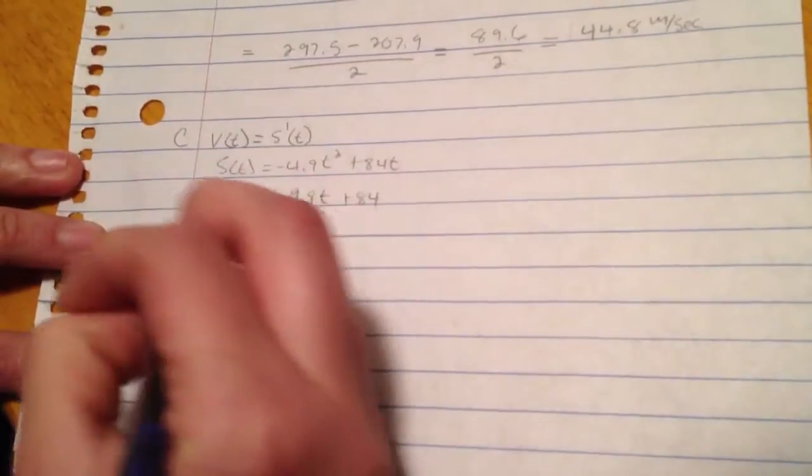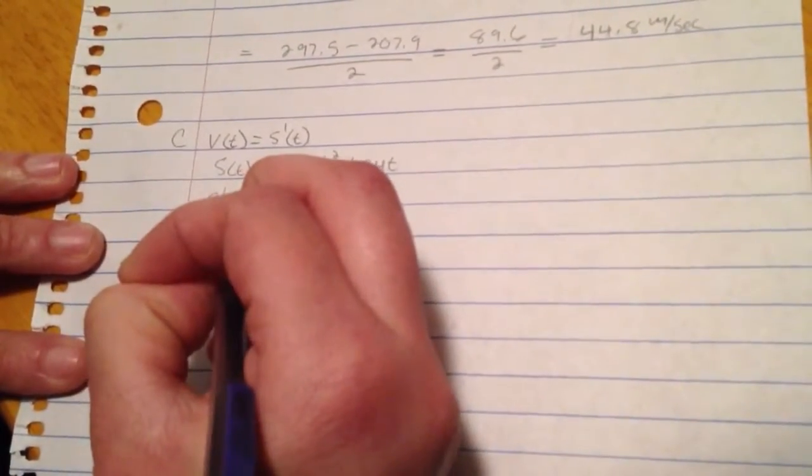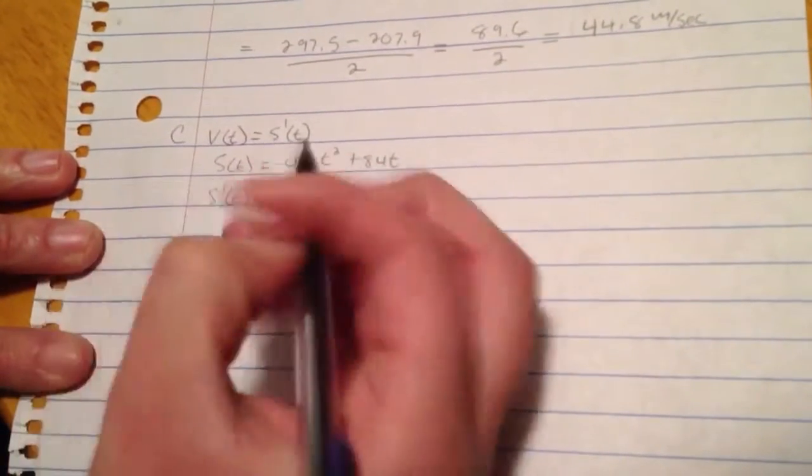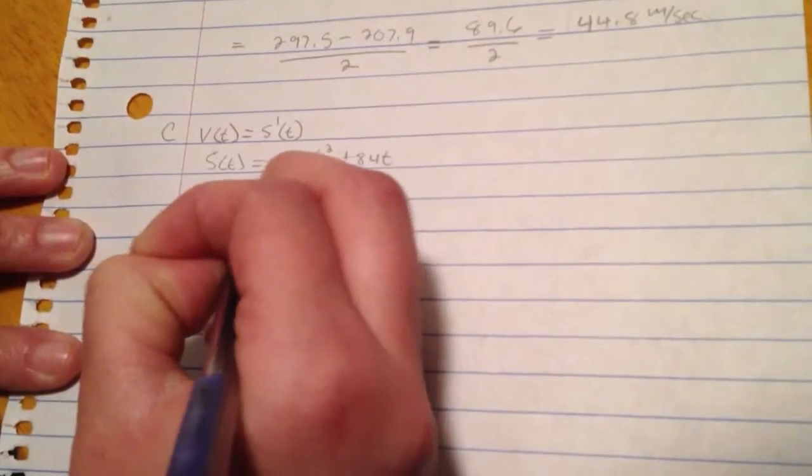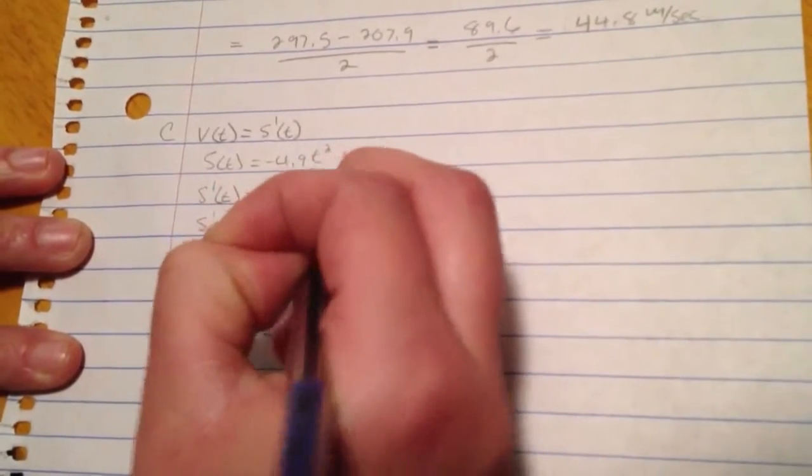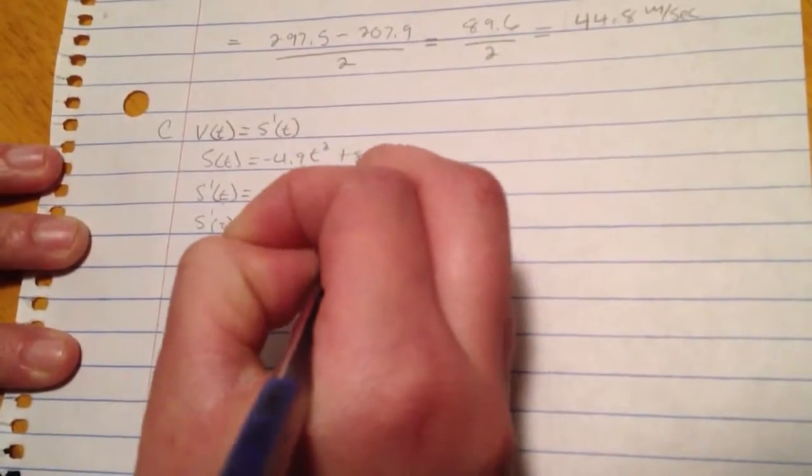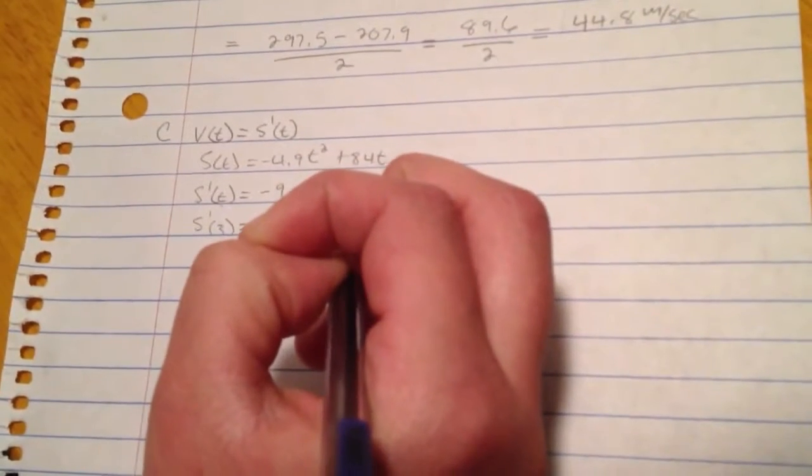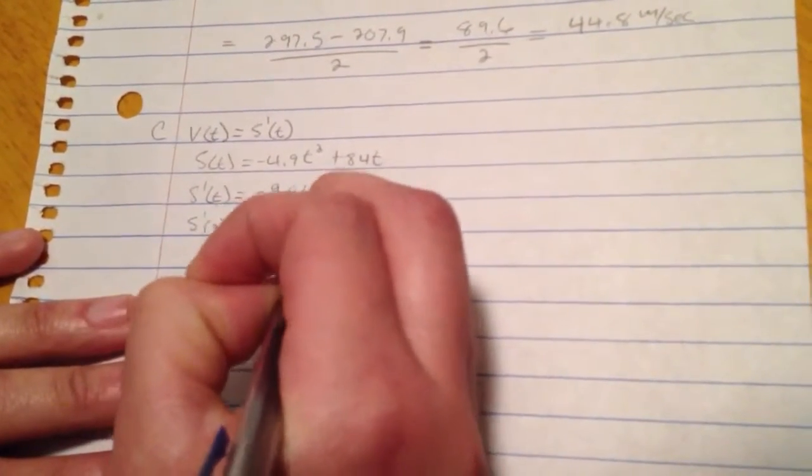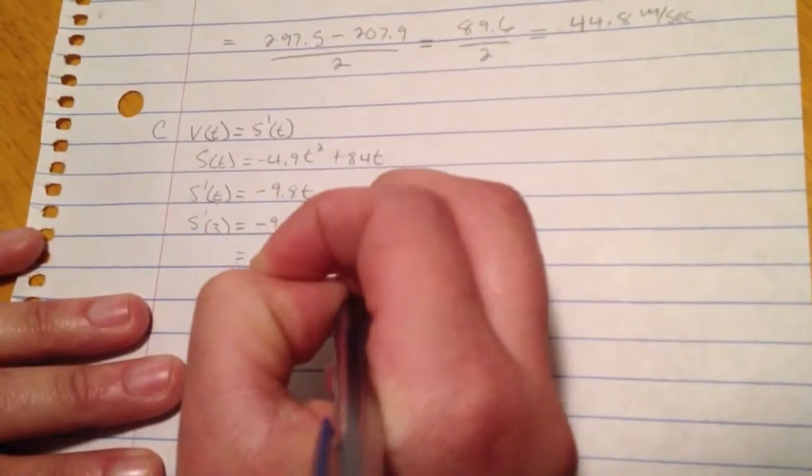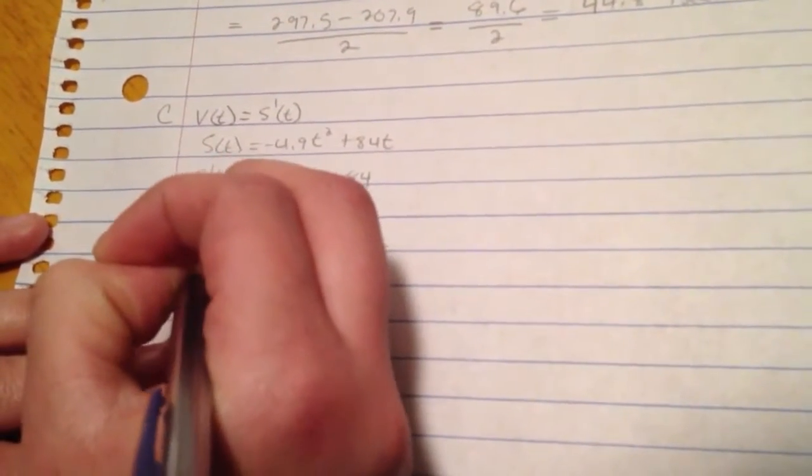So if we evaluate this at the point 3, you'll have s prime of 3 equals negative 9.8 times 3 plus 84. This is going to give us 54.6 meters per second. And this is your instantaneous velocity.